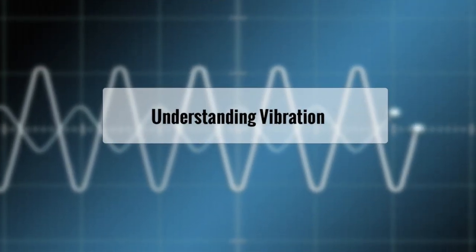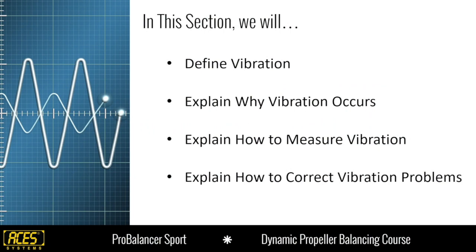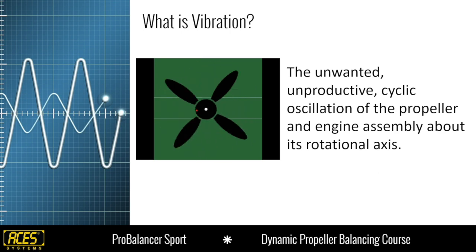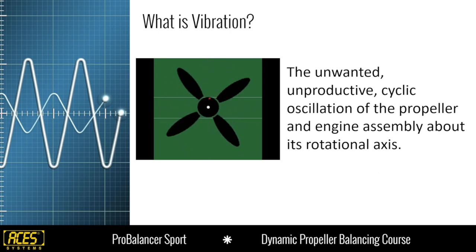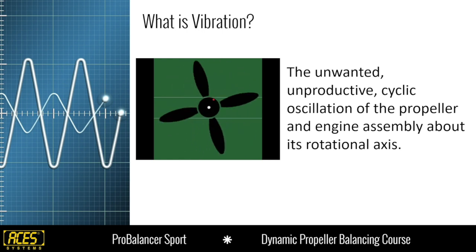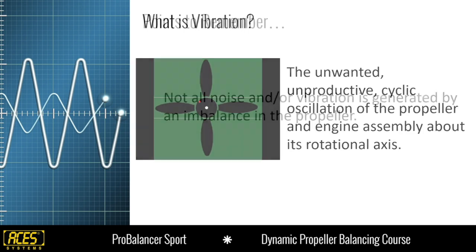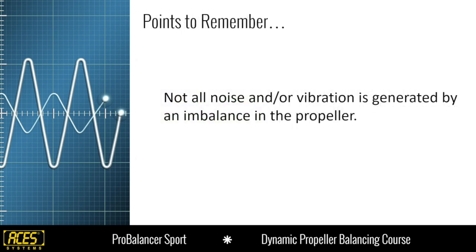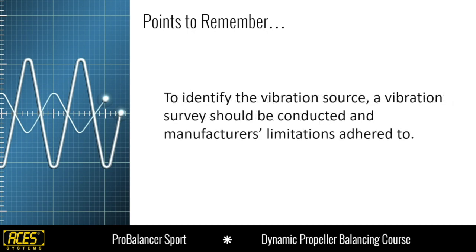Understanding vibration. In this section, we're going to define vibration, explain why it occurs, how we measure it, and how we correct the vibration problems. What is vibration? It's the unwanted, unproductive cyclic oscillation of a propeller and engine assembly about its rotational axis, as you can see in the illustration with the little red dot being the heavy spot. Not all noise and vibration is generated from an imbalanced propeller — there could be other things going on in the aircraft or engine assembly.